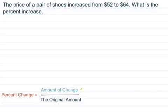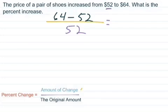I'm going to write this down. Percent change. The amount of change, so that's our greater value, 64, minus our lesser value, which is 52, over the original amount. Shoes increased from, they started at 52, so that's our original amount. Now we can subtract and then divide by 52.